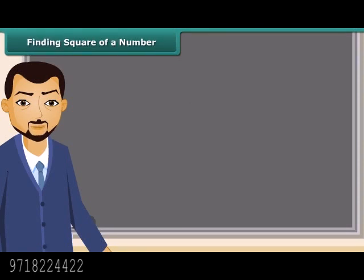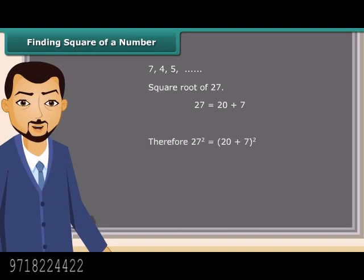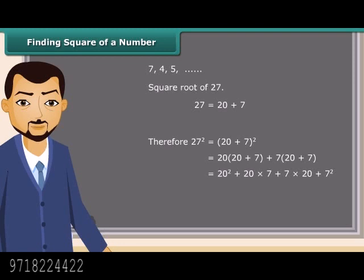Let us now learn about square roots. We can easily find the squares of small numbers like 7, 4, 5, etc. But is it easy to find the square of 27 so quickly? We know 27 is a sum of 20 and 7. Therefore, a square of 27 is equal to (20 + 7)², which is equal to 20×20 + 7 + 7×20 + 7, which equals 20² + 20×7 + 7×20 + 7², which is 400 + 140 + 140 + 49, which is equal to 729.